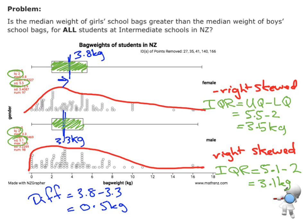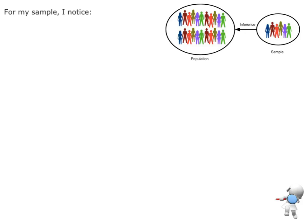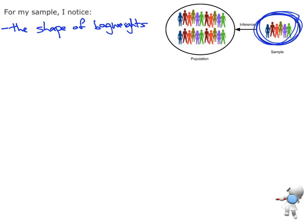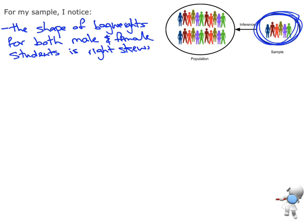Now I've got all the information, I need to write them up as comparative statements. First of all, the shape: I've said the females are right skewed and the males are right skewed, so together they've both got a similar right skewed shape. For the sample, I notice that the shape of bag weights for both male and female students is right skewed. That's an achieved level comment — it's comparative, I've said they've both got the same shape and I've named it.